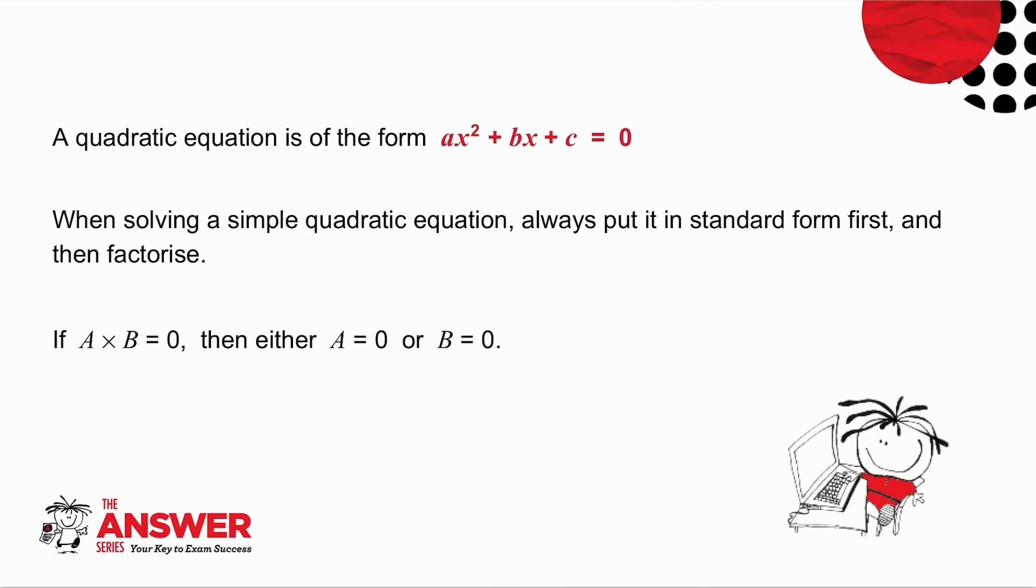A quadratic equation is of the form ax squared plus bx plus c equals 0. When solving a simple quadratic equation, you always put it in standard form first and then factorize.